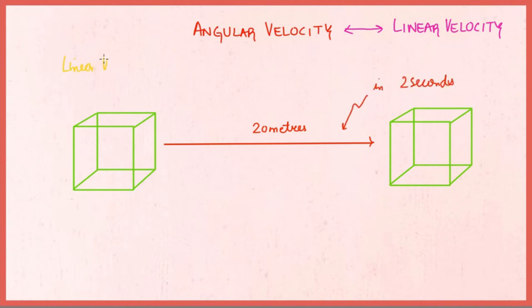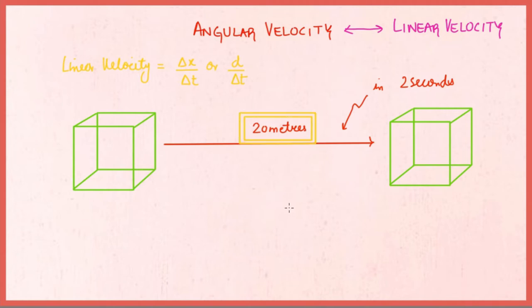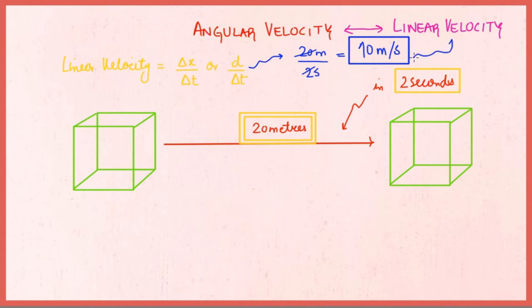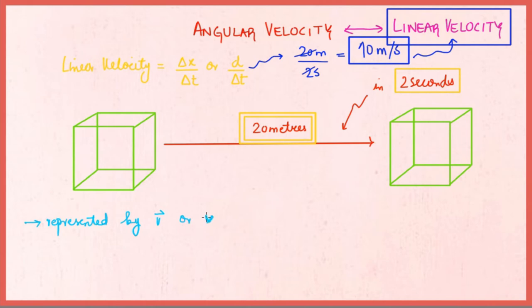Let the displacement be 20 meters and let the time taken by the box be 2 seconds. Linear velocity is defined as the change in position, i.e., displacement over time. It is represented by delta x over delta t. Delta x is 20 meters and delta t is 2 seconds, giving 10 meters per second. Velocity is the rate of change of displacement and is a vector quantity, represented by V with an arrowhead or bold V. The SI unit of velocity is meters per second.